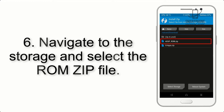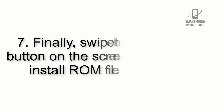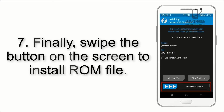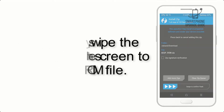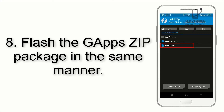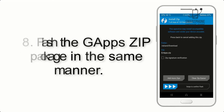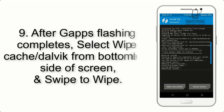Step 6: Navigate to the storage and select the ROM zip file. Step 7: Finally, swipe the button on the screen to install the ROM file. Step 8: Flash the Gapps zip package in the same manner.